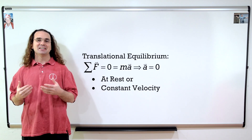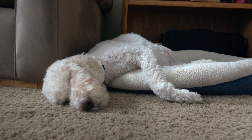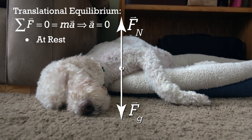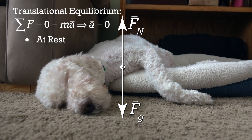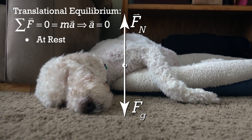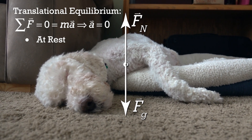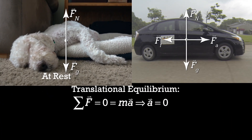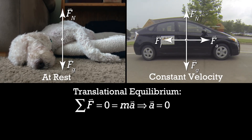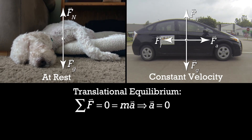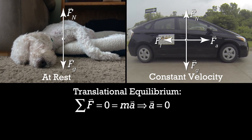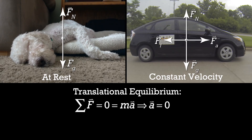Let's visualize that. This is my dog Buster. When we add up all the forces acting on him, they add up to zero, so he is in translational equilibrium, and you can see he is at rest. He is an object at rest in translational equilibrium. This is my car. My car is moving at a constant velocity. The sum of all the forces acting on my car equals zero, therefore the car is moving at a constant velocity, has zero linear acceleration, and is in translational equilibrium.